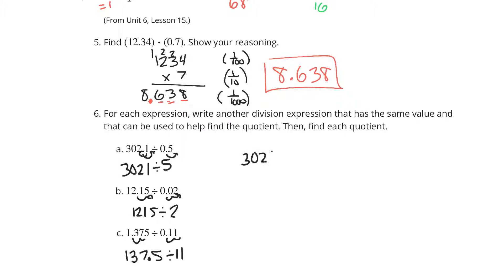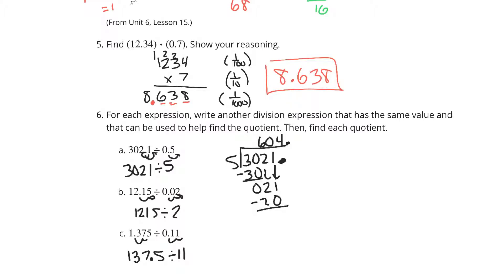Using long division: for 3,201 divided by 5 — 6 times 5 is 30, drop down the 2; 5 doesn't go into 2 so put a 0 above the 2, bring down the 1 to get 21; subtract 20, then use a decimal point and zeros. Bring down a 0 — 5 goes into 10 two times, subtract 10, get 0. So the solution is 604 and 2 tenths.